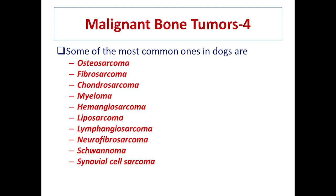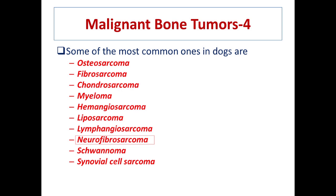Osteosarcoma is sarcoma of bone; fibrosarcoma is sarcoma of fibroblast cells; chondrosarcoma is sarcoma of cartilage. Myeloma is a tumor of myeloid cells, which are precursors for RBCs and WBCs present in the bone marrow. Hemangiosarcoma is sarcoma of blood vessels; liposarcoma is sarcoma of fat; lymphangiosarcoma involves lymph nodes; neurofibrosarcoma is sarcoma of nerve fibers. Schwannoma is sarcoma of Schwann cells, and if sarcoma develops in a synovial joint it is known as synovial cell carcinoma.